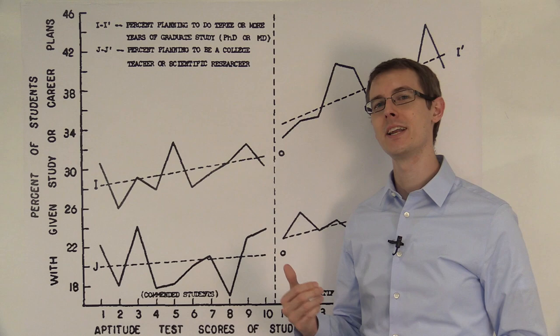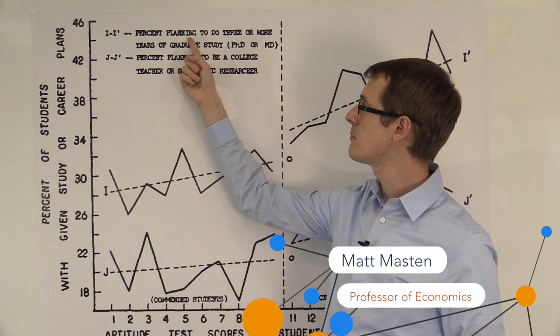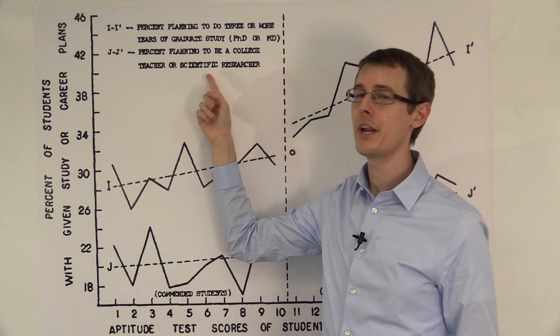Here's the next set of outcome variables that Thistlethwaite and Campbell look at. They look at the percentage of students planning to go on to graduate study, and the percentage of students planning on being a college teacher or a scientific researcher.